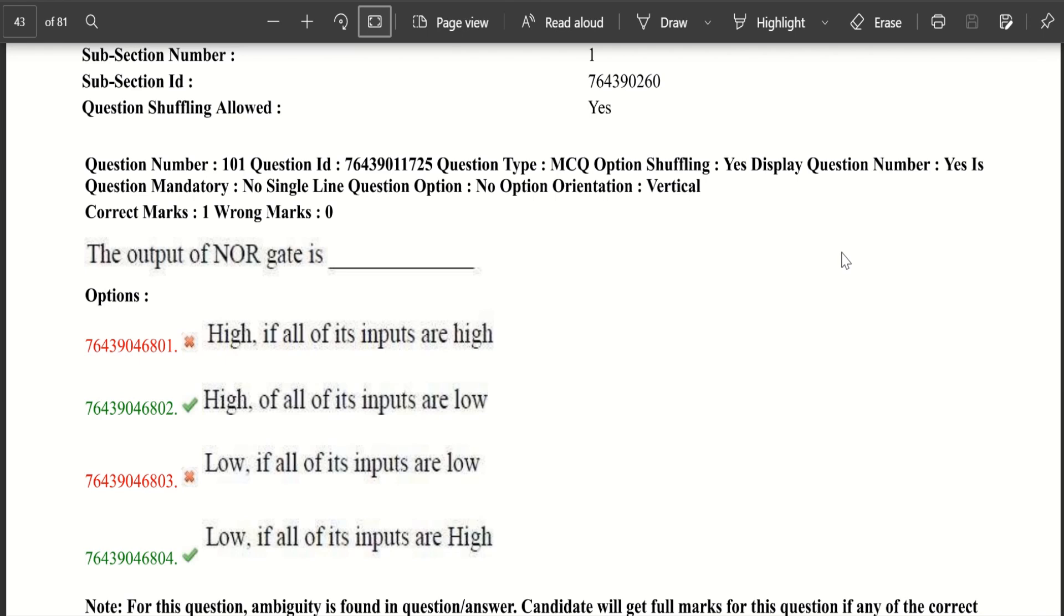Now let's move to our first question. The output of NOR gate is. For these kinds of questions, you must have to draw the truth table and check the suitable options.